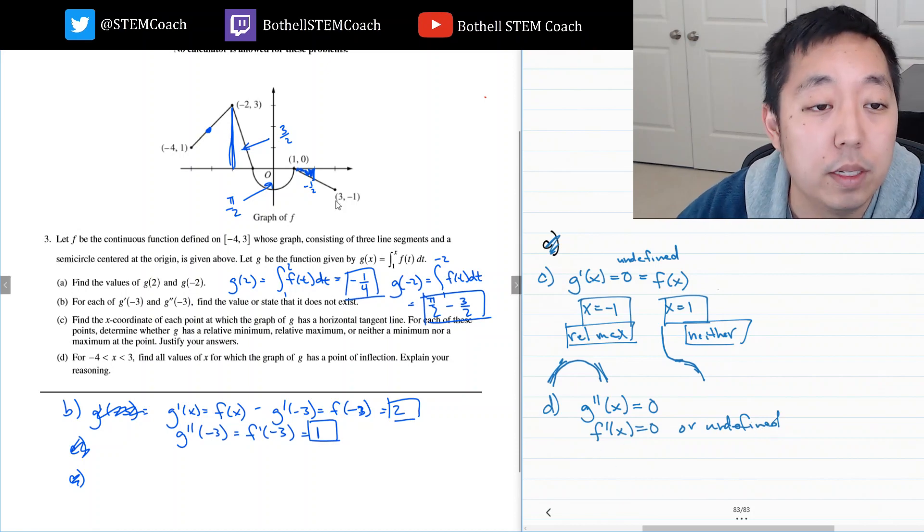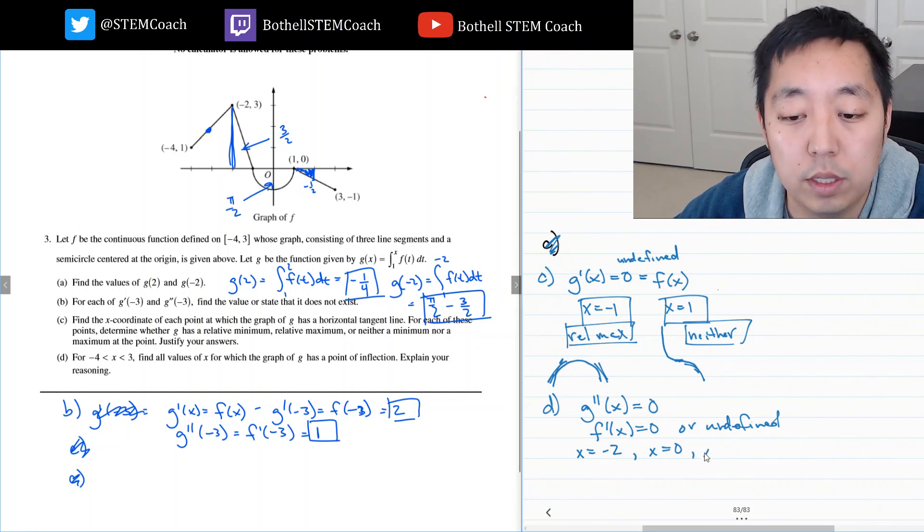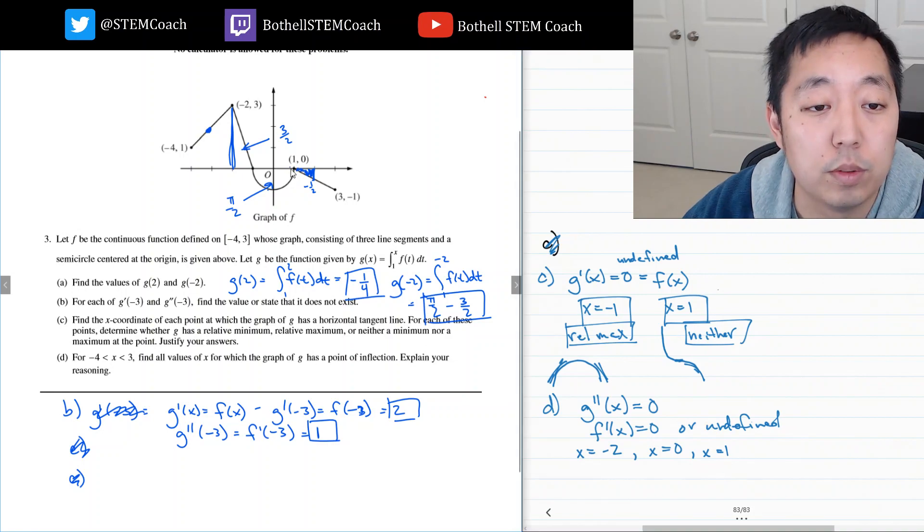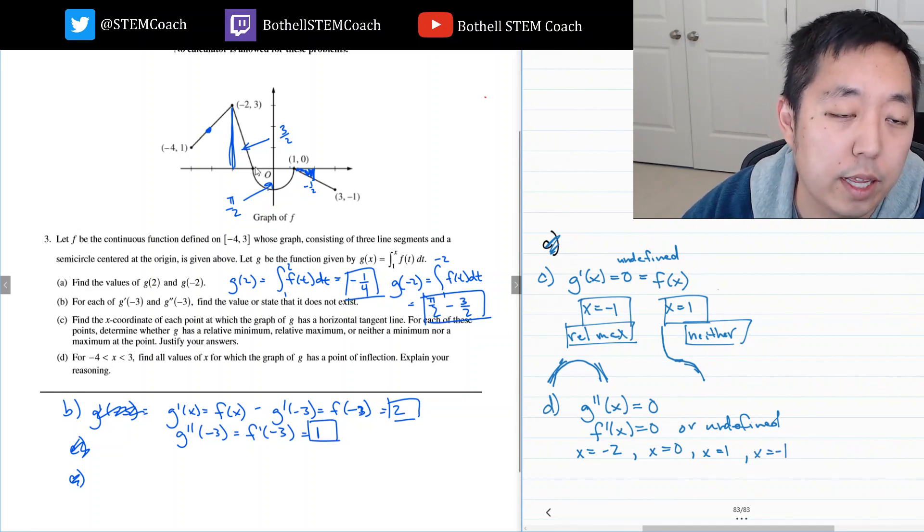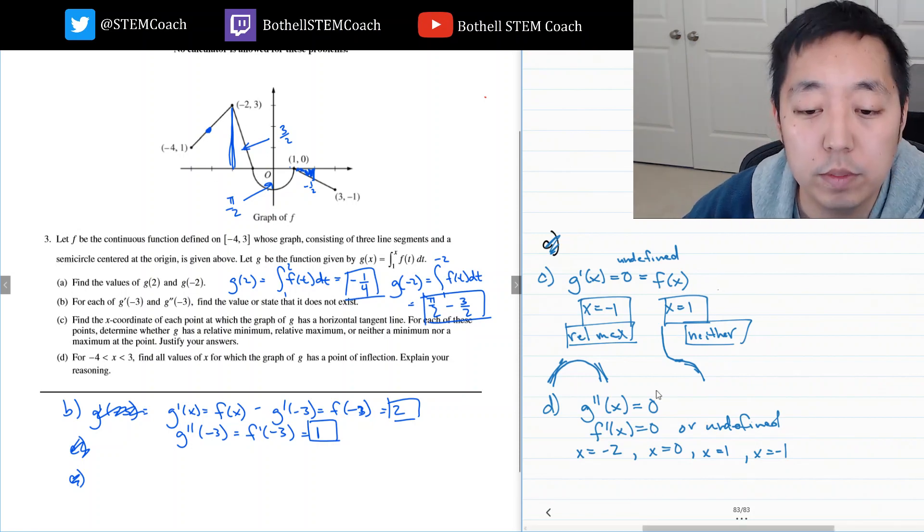So, when does that happen? Our candidates are x equals negative two, because it's undefined there. Right here, x equals zero, because the derivative of F would be zero there. And then, at x equals one, because the derivative is undefined there. Anywhere else? Oh, derivative is also undefined at negative one. You kind of see that? It's kind of like a little jagged thing. Like, what that means is the slope from the left side and the slope from the right side aren't the same. So, that's good.